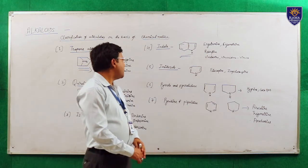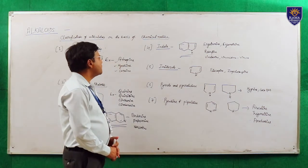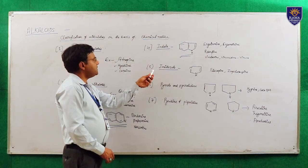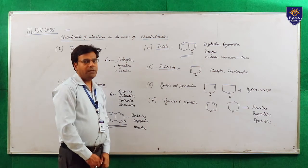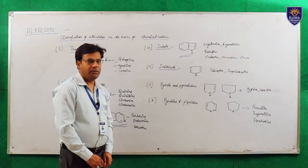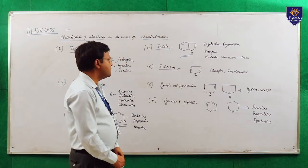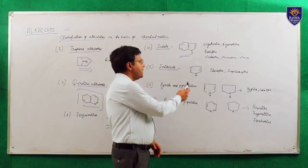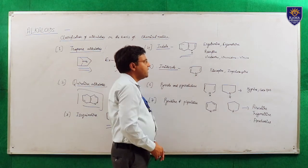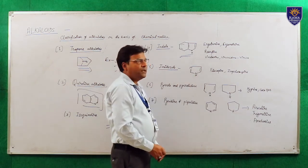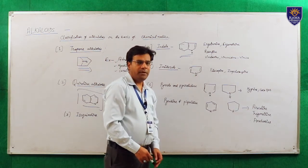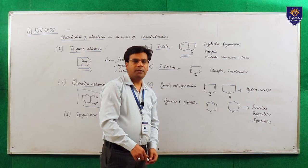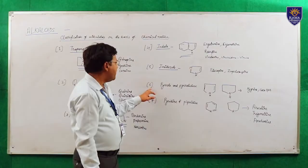Another category is imidazole alkaloids. The basic moiety is imidazole, and examples are pilocarpine and isopilocarpine. Pilocarpine is obtained from jaborandi or Pilocarpus species.